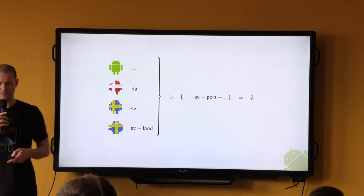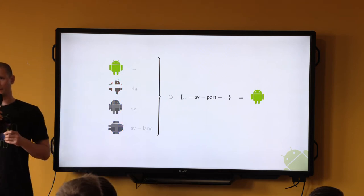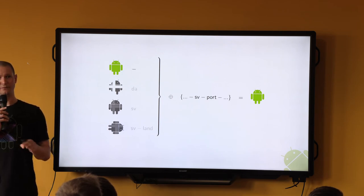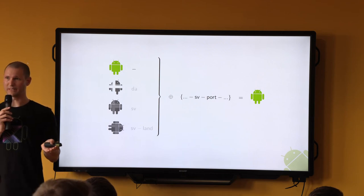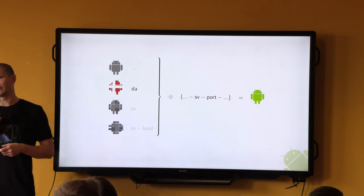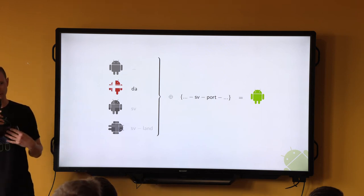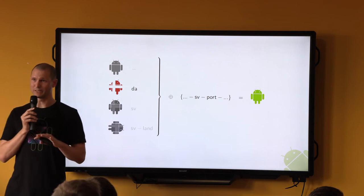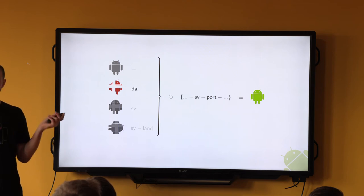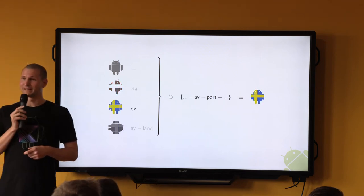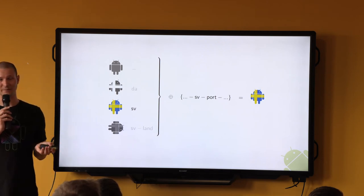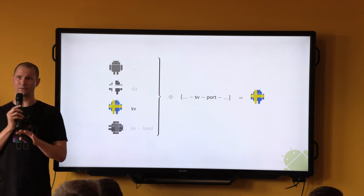Walking through the algorithm: starting from the top with the default version, by definition default is compatible with every configuration, and since we didn't have a best match yet, this becomes our candidate. Next in line is Danish — being Swedish with family in Denmark, I tend to think of Swedish and Danish as somewhat compatible, but that's not the opinion of Android, so Danish is skipped. Next is Swedish, which is compatible with the requested configuration and is in fact a better match than the default.